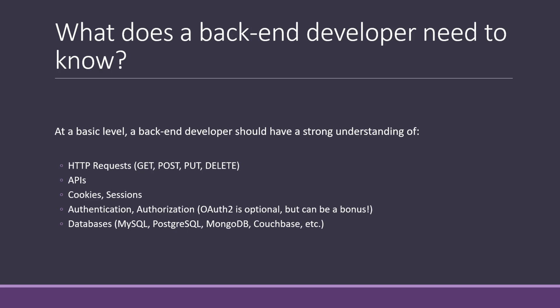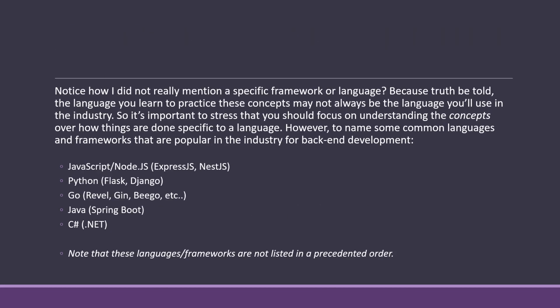Authentication is the process of validating a user's credentials — so if you type in the wrong username or password, the server will tell you to please try again. Authorization refers to the process of protecting certain resources that can only be viewed by specific users. There are also databases — you can't go wrong with MySQL, Postgres, MongoDB, Couchbase, etc. And for the record, GraphQL is not a database.